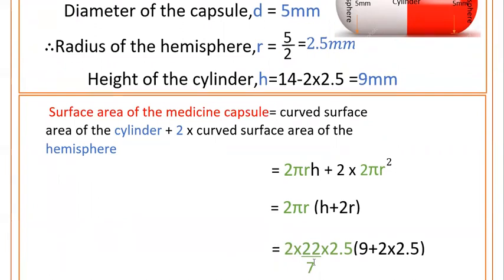That equals 2 times 22/7 times r is 2.5, times h is 9 mm. So 9 plus 2 times r, that is 2 times 2.5. This is nothing but the total length, so you can directly write h plus 2r equals the total length, 14.